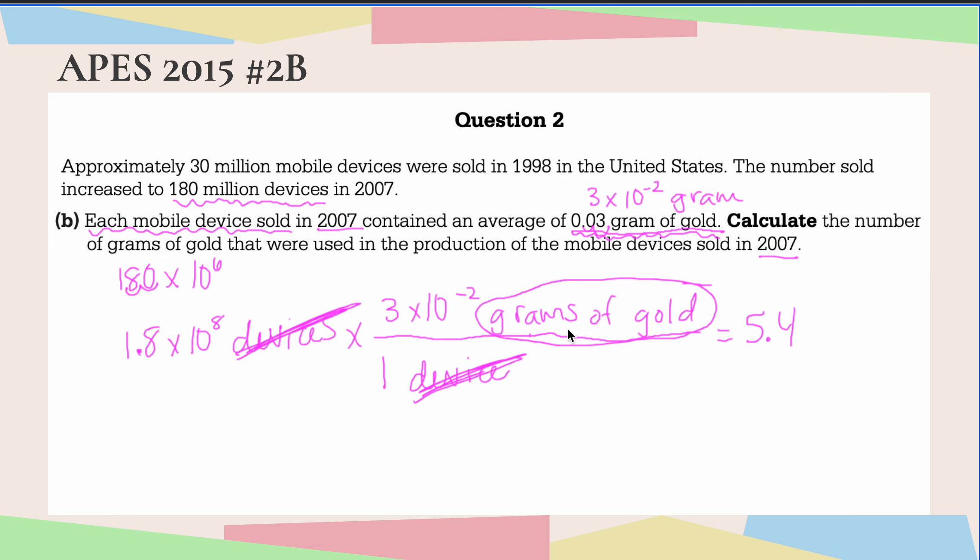So 10 plus negative 2 is 6. So it's going to be 5.4 times 10 to the 6th grams of gold. There we go. And that would be our final answer.